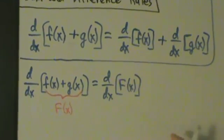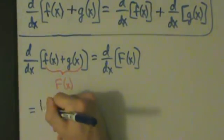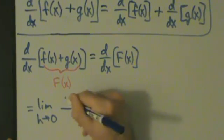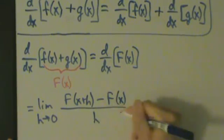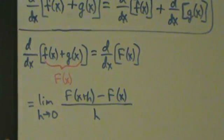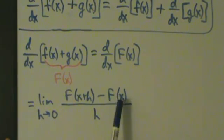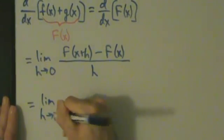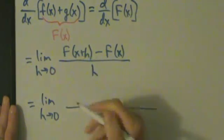What's the derivative of big F(x)? Straight from the definition, that equals the limit as h goes to 0 of big F(x+h) minus big F(x), all divided by h. Now let's substitute back into little f and g. Big F(x) is little f(x) plus g(x), so big F(x+h) is going to be f(x+h) plus g(x+h).